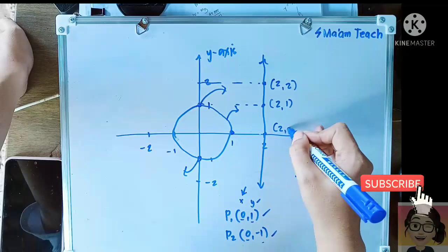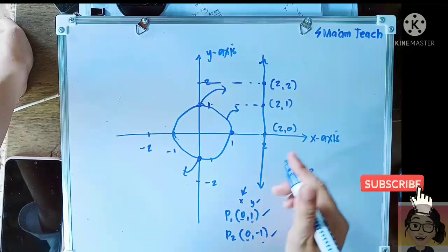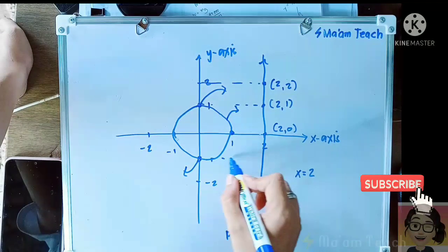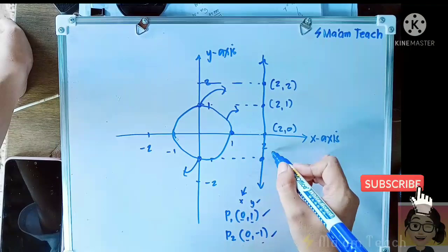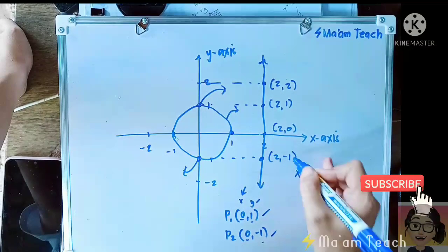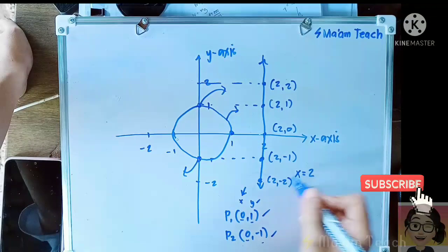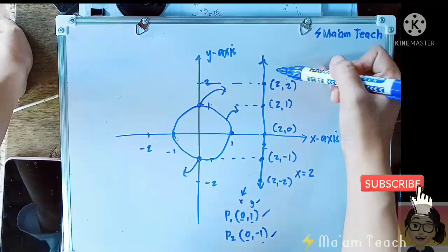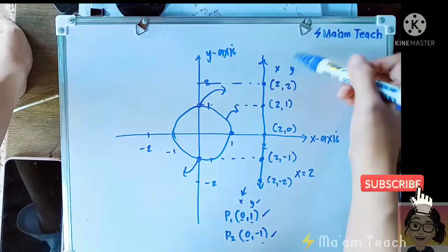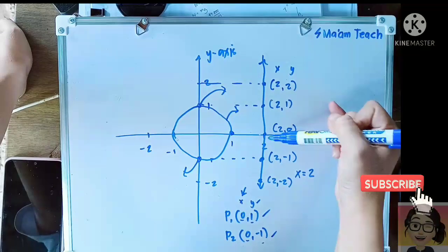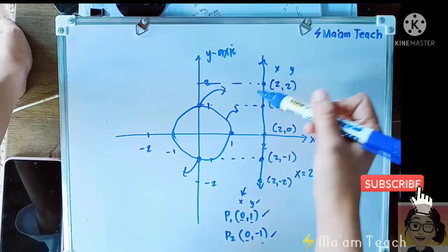This point here is (2,0). Well this one, this point is (2,-1). This one is (2,-2). What can you observe? These are values of x and our values of y.